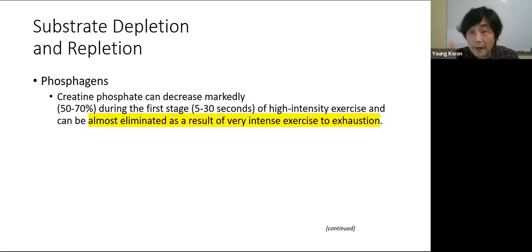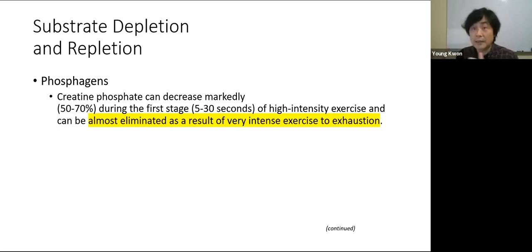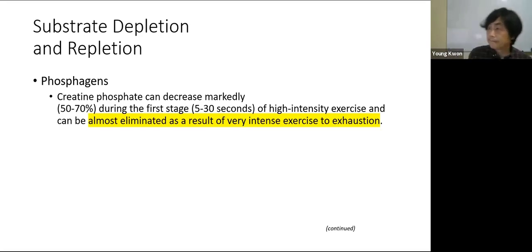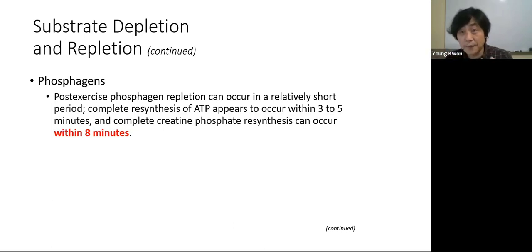To summarize: intensity first, then duration, for determining the dominant energy system. For exercise at 50-70% intensity lasting 5 to 30 seconds, the phosphagen system is most important. Creatine phosphate is critical for the phosphagen system. To do a second set of exercise, creatine phosphate must recover first.